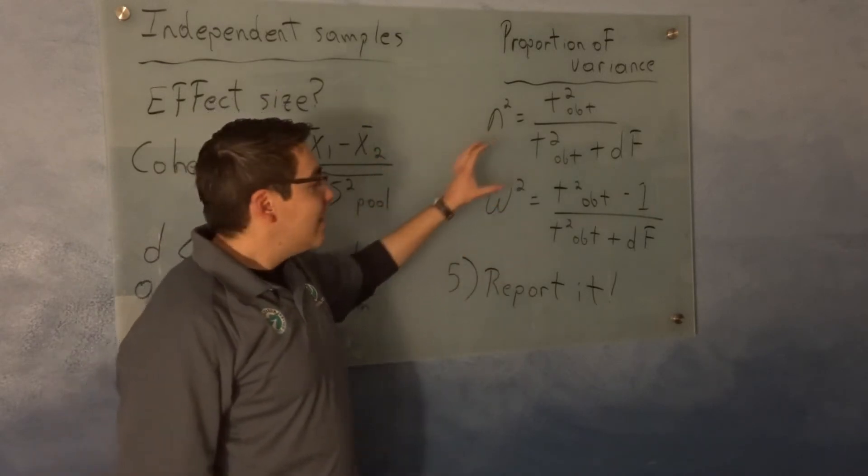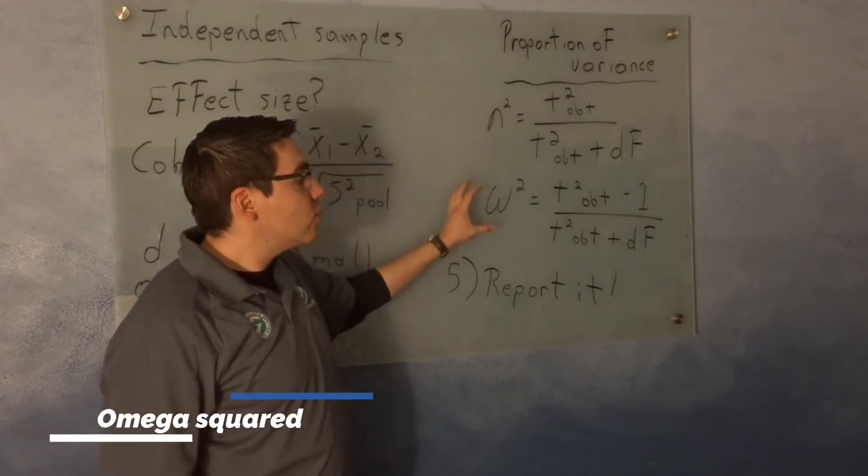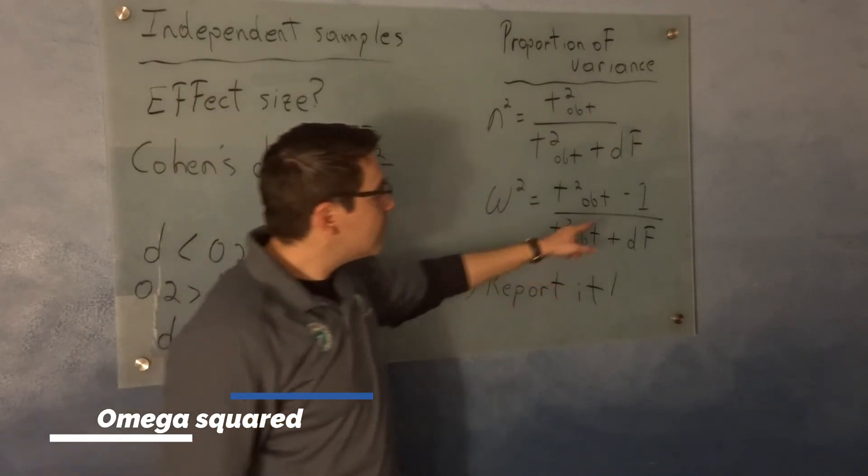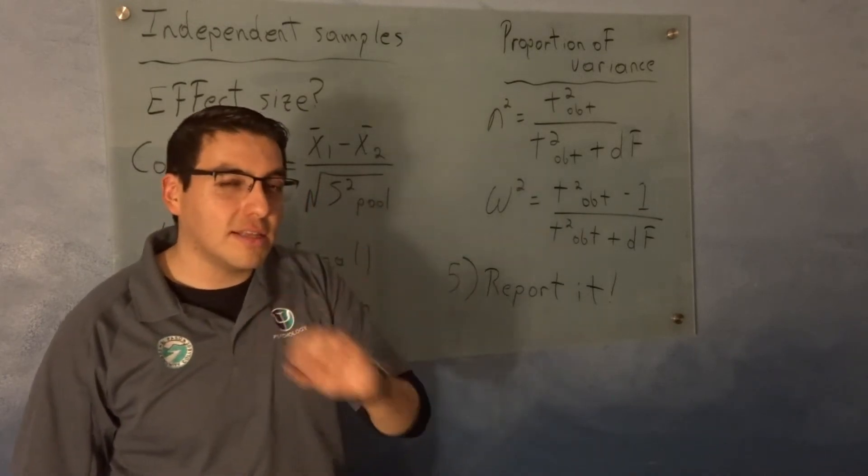And that's going to give you one. The second one is called omega-squared. So eta-squared is one, omega-squared is the other one, it's almost the same. The only difference is minus 1. So pay a lot of attention to this, you may need to write it down.